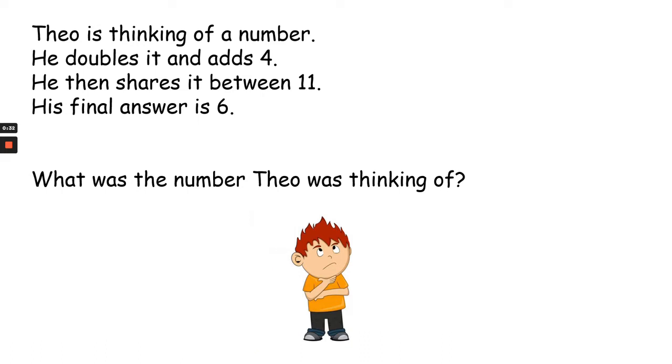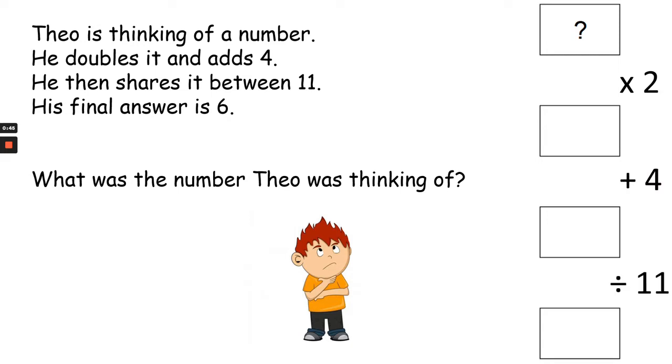Alright, let's have a look at your method. You should have something that looks a bit like this. Theo was thinking of a number and he doubled it. He timesed it by 2. He then added 4. He then shared between 11. He divided it by 11 and he ended up with 6. This should be your method, ready to use the inverse to solve it.